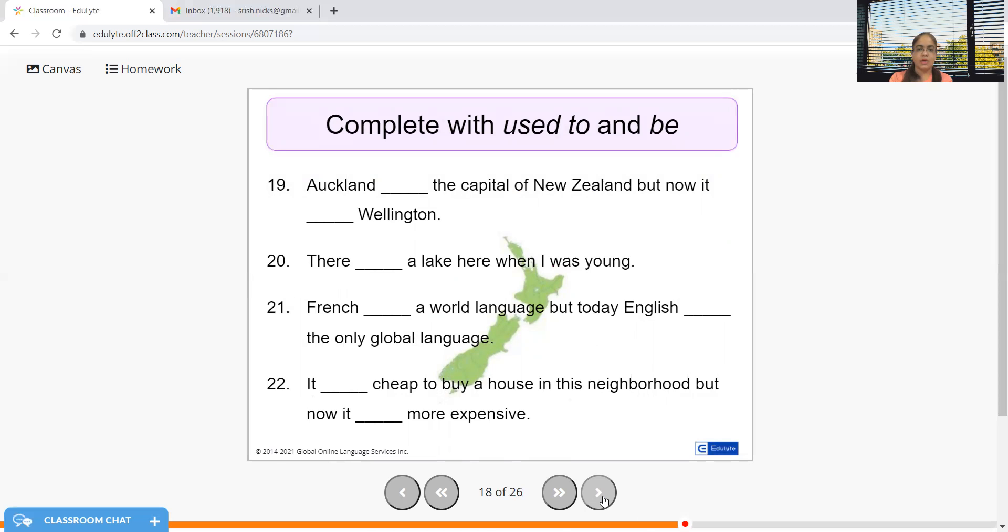French used to be a world language but today English is the only global language. It used to be cheap to buy a house in this neighborhood but now it is very very expensive.